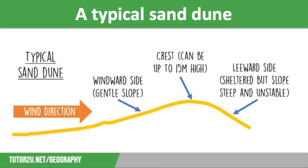On the screen you have a simple diagram of a typical sand dune. You can see the wind direction with the windward side, which is a gentle slope facing the sea, the crest which can be up to 15 metres high, and the leeward side which faces away from the sea, which is sheltered but has a steep and unstable slope.